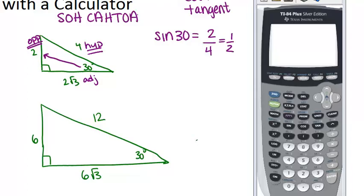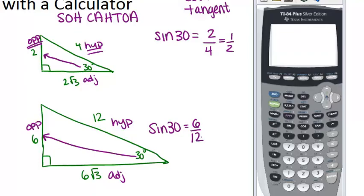Now what if we looked at the bigger triangle? Maybe you'd think, well maybe here the sine will be bigger. Sine of 30 degrees, well, opposite is 6, and hypotenuse is 12. We won't use the adjacent side, but that would be 6 root 3. So the sine of 30 with this triangle is going to be 6 over 12, which also reduces to 1 half. So as you can see, the sine of 30 will always be 1 half.